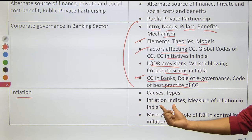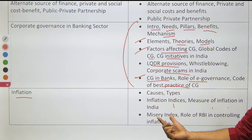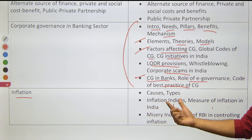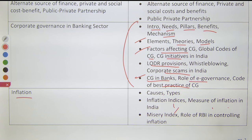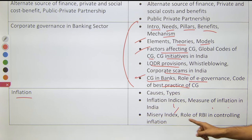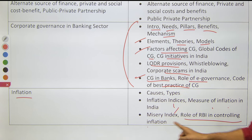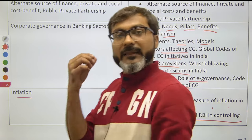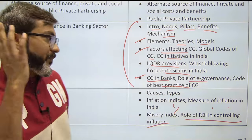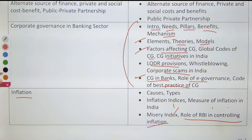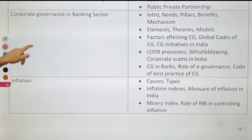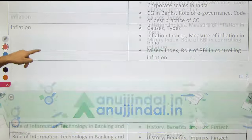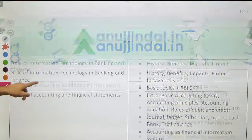Next is Inflation. Cover causes, types, inflation indices, measurement of inflation, misery index, and the role of RBI in controlling inflation. This is something very important — it appears in the exam every single year.